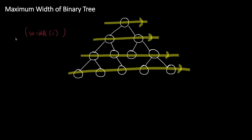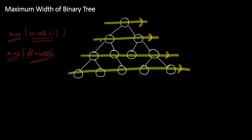We have to find the width of each level and return the maximum. Suppose the question were instead to find the number of nodes in each level — we could maintain a count variable during level order traversal and increment it for each node visited. But that technique won't work here because in the width calculation we also consider null nodes. So we need to maintain some index for each node.